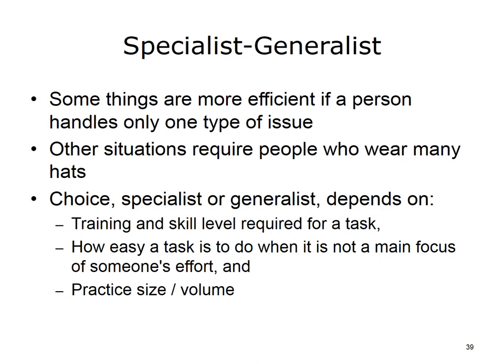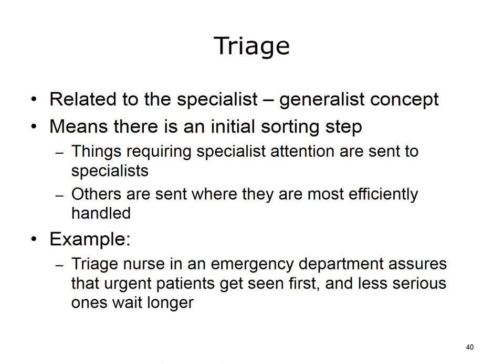Specialist-generalist is more of a consideration than a particular strategy. Some things are more efficient if a person handles only one type of issue — for example, in a large practice where one person can devote 100% of their time to scheduling external diagnostic tests or surgeries, whereas in a small practice people wear many hats. The choice depends on the training and skill level required for a task, how easy a task is to do when it is not someone's main focus, and the size of the practice. Triage is related to the specialist-generalist concept — an initial sorting step where things requiring specialist attention are sent to specialists and others are sent where they are most efficiently handled. For example, a triage nurse in an emergency department ensures that urgent patients get seen first and less serious ones wait longer.